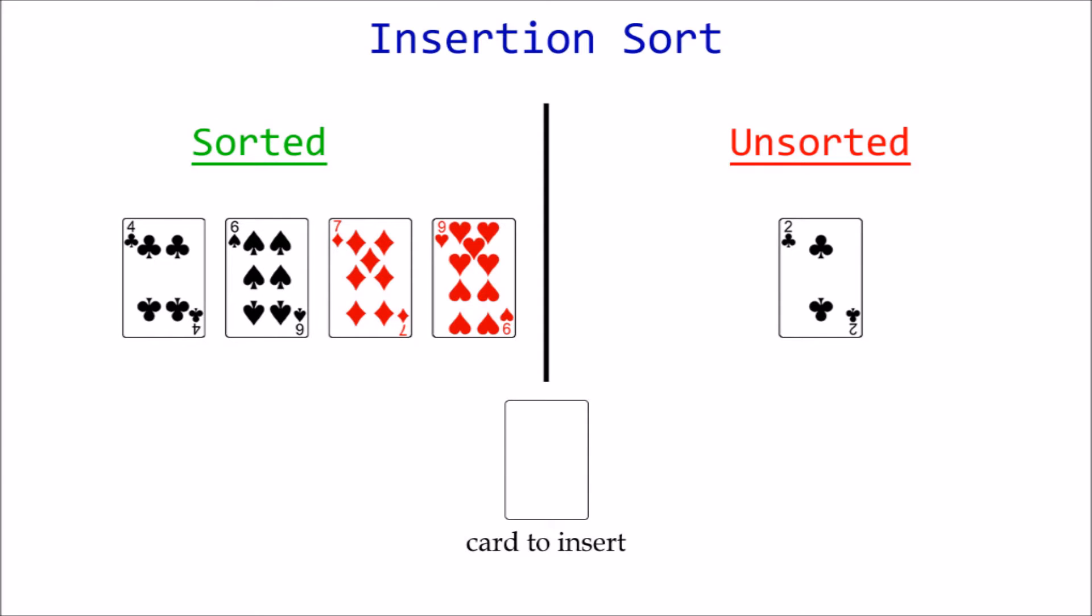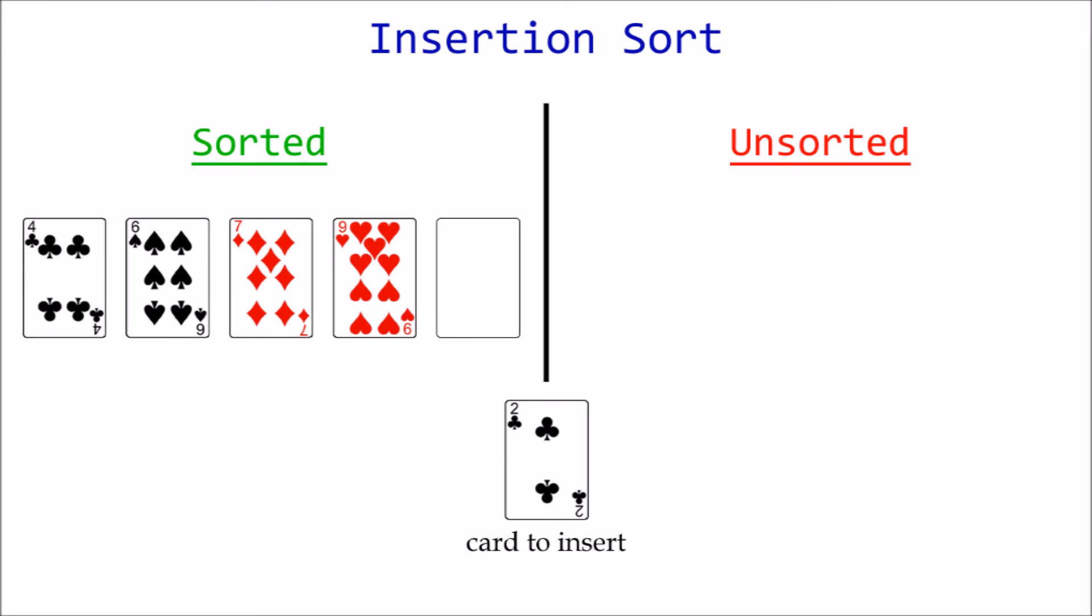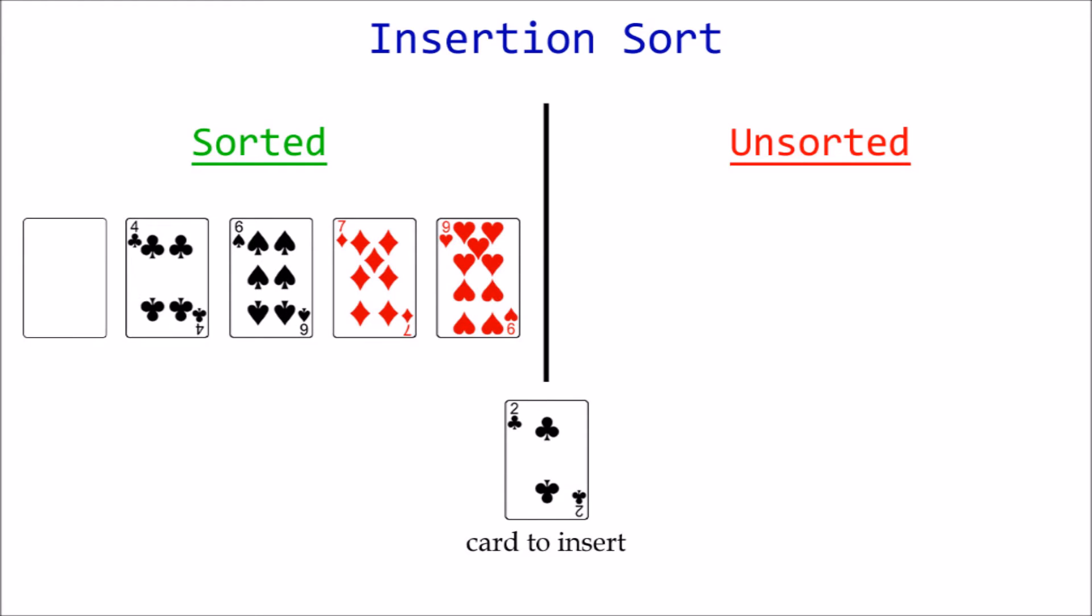This leaves us with just one unsorted card remaining. 2 is less than every card in the sorted section, so one by one, they're all shifted to the right, resulting in an empty slot at the very front. After insertion, all cards have been sorted.